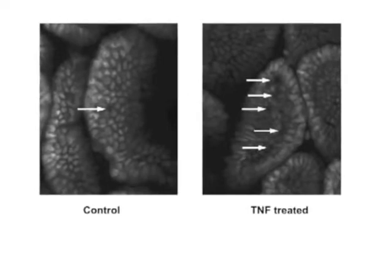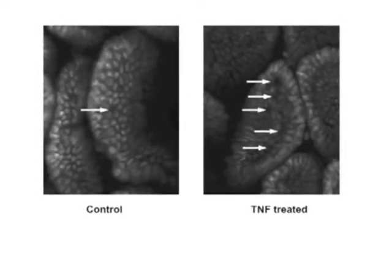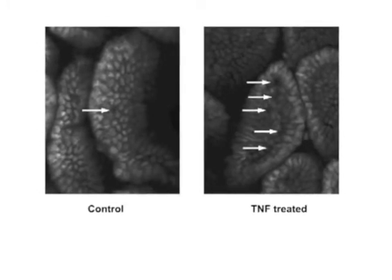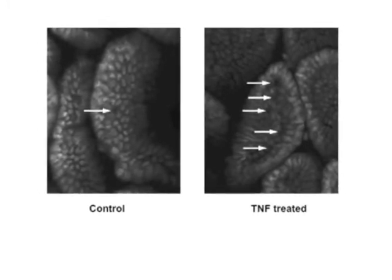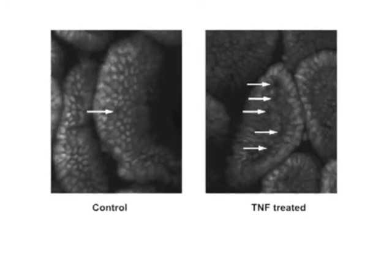Epithelial gap appearance on three-dimensional confocal laser microscopy is shown in this figure. On confocal laser microscopy, the nuclei of epithelial cells are brightly stained with acriflavine and gaps appear as dark irregular areas surrounded by adjacent cells.